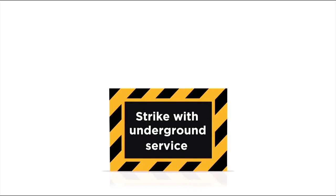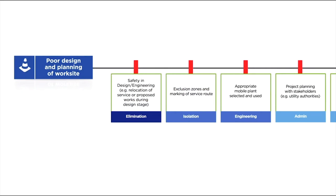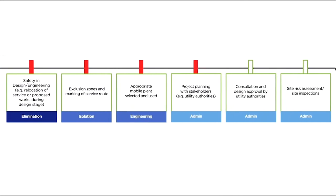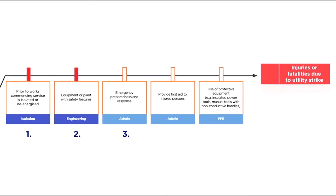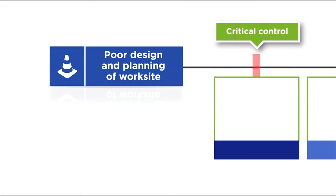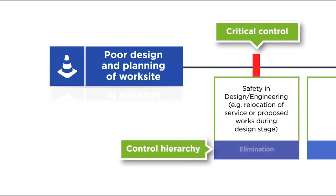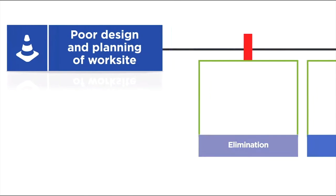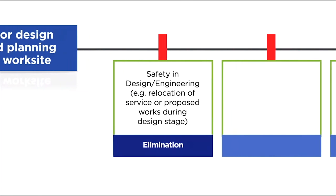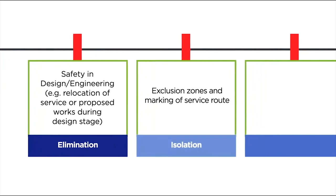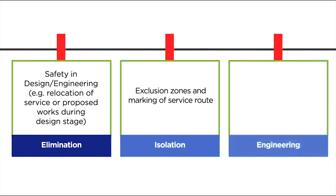The hazardous event in this bowtie is strike with underground service. Looking at poor design and planning of worksite as a contributing factor, six preventative controls have been identified and assessed. Our focus should always be on preventing hazardous events in the first place. Five mitigative controls have also been identified to lessen the impact of injuries or fatalities due to utility strike. Critical controls are shown with a red tab, with a detailed description and an indication of where in the hierarchy they sit. In this example, we can eliminate the risk through safety in design by relocating underground cables prior to commencing work, isolate the risk by establishing exclusion zones and marking out the underground service route, and select appropriate plant and equipment with fitted safety features to excavate around underground services. These critical controls are essential to protect workers from injury or death.